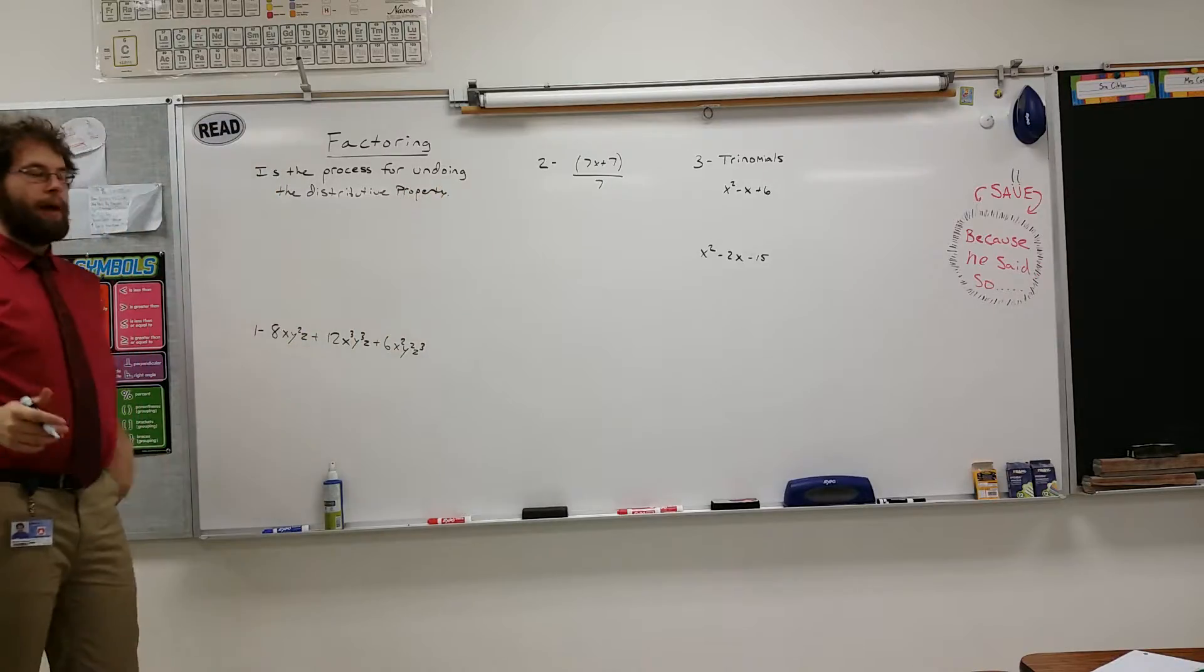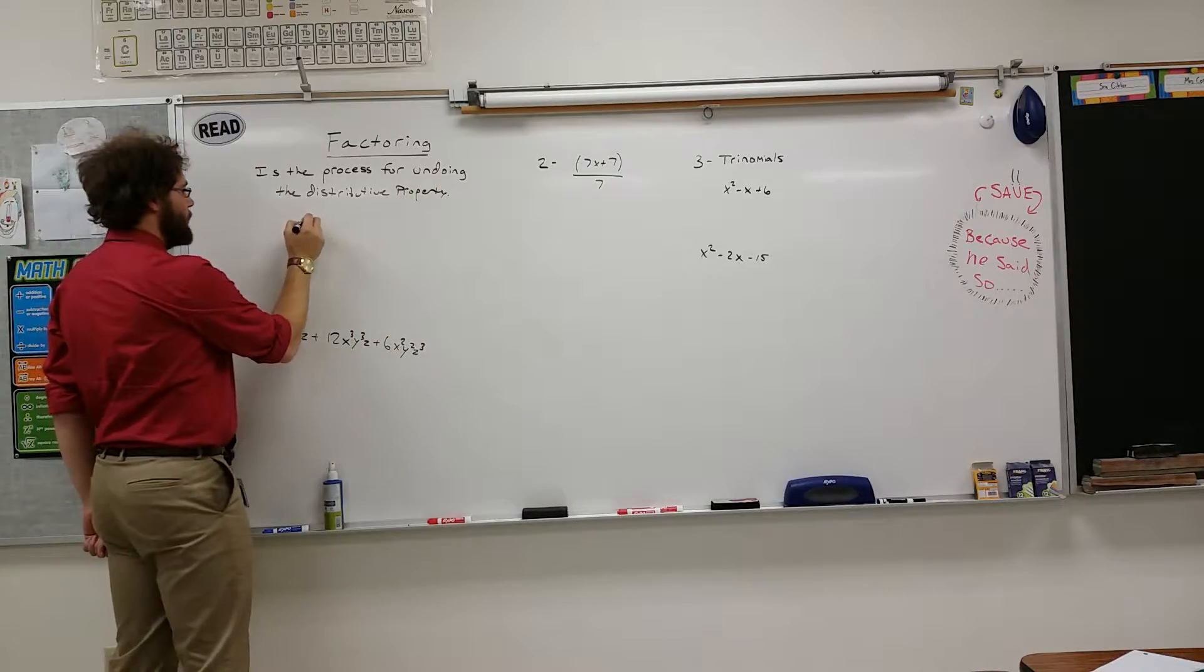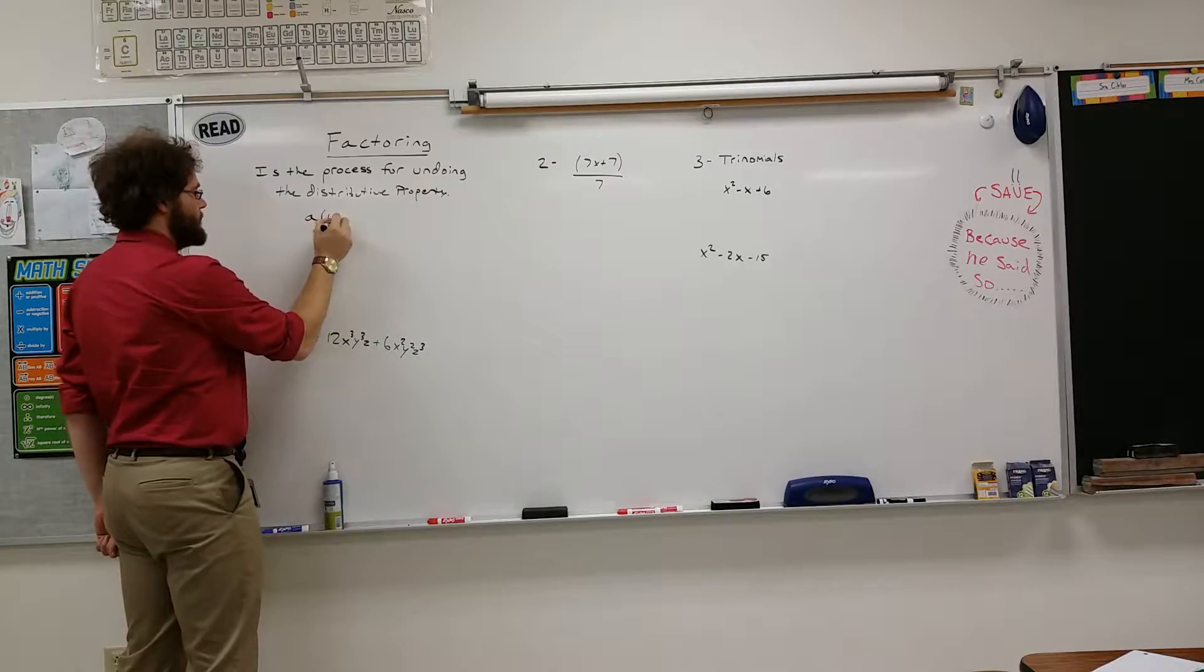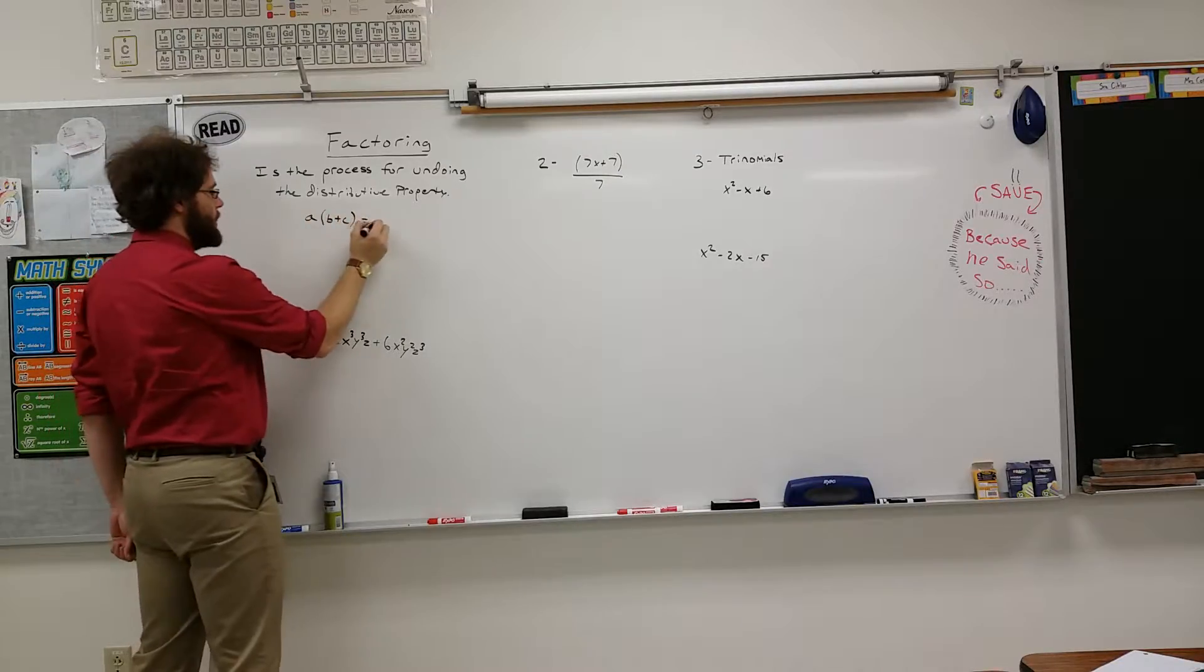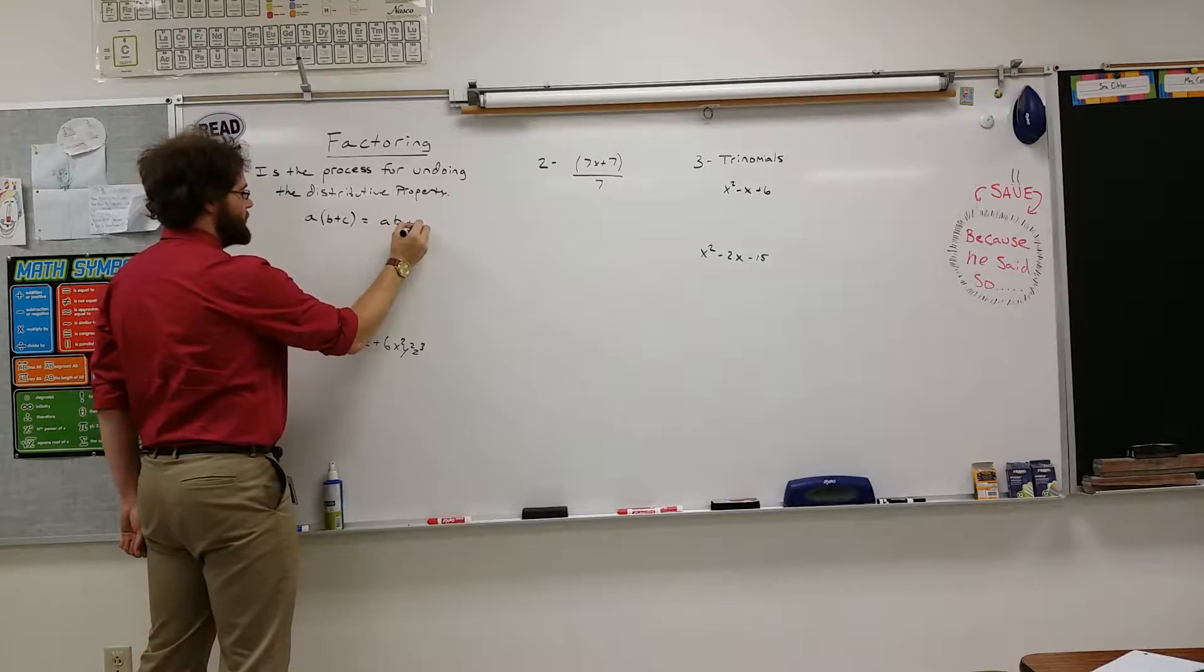So remember back to the distributive property video, you had a number on the outside of something in parentheses like this, and you distribute it in, and you get AB plus AC.